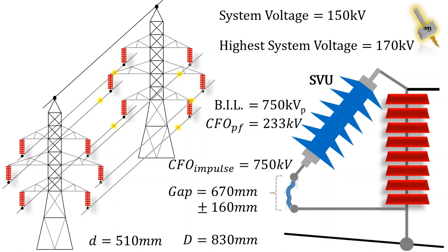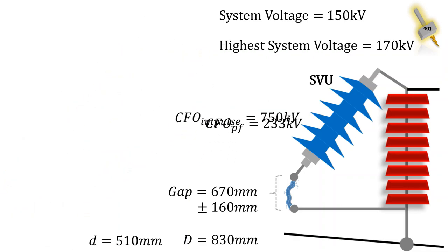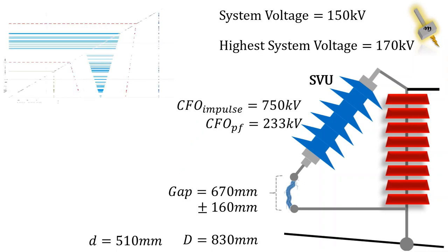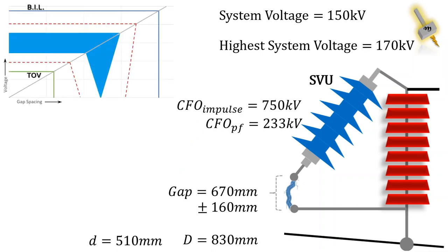Let's check what is the spark over voltage compared against the system BIL and system TOV. With 670 mm as the nominal value of spark gap, the lightning impulse spark over voltage is calculated as 396 kV peak. For this design, the spark gap has minimum 53% protection margin compared against the system BIL.